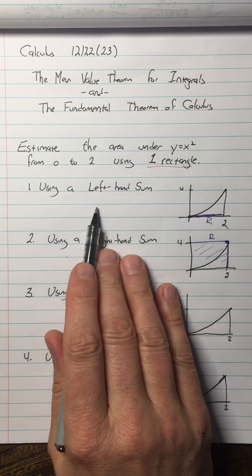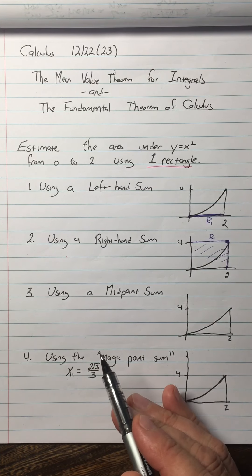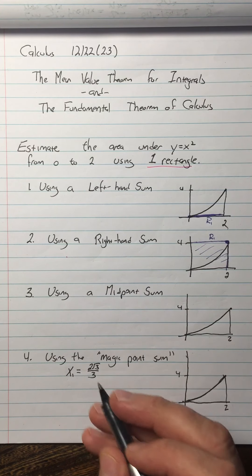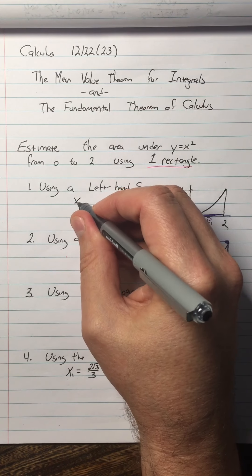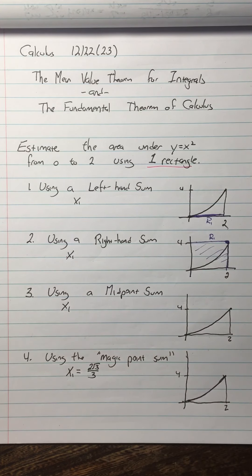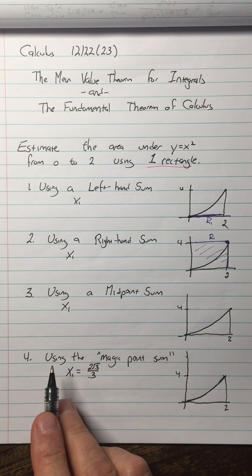And sometimes for a left-hand sum, I start with x sub zero, which is convenient in some notations and not in others. And in this case, I'm going to call them all x1. The difference among these four different types of evaluating this single rectangle Riemann sum is where the x1 is.